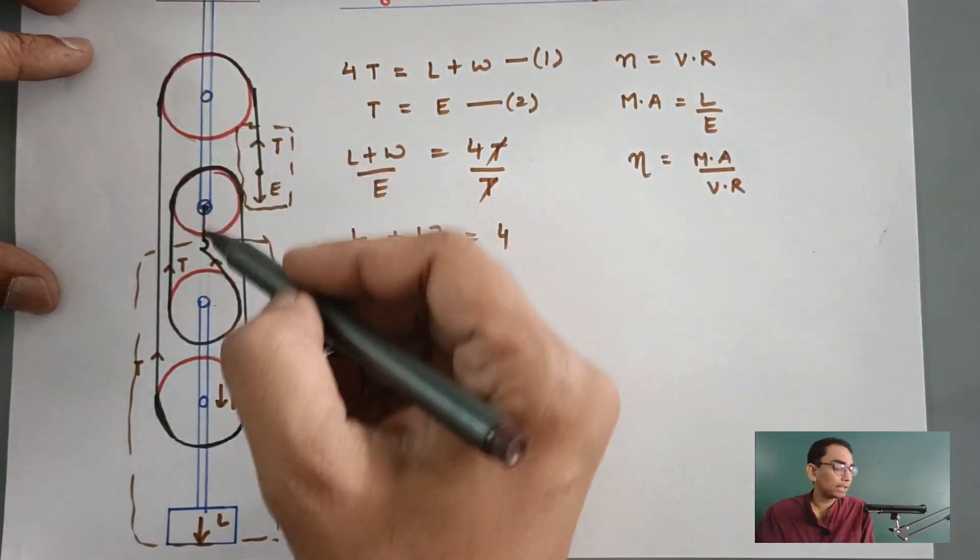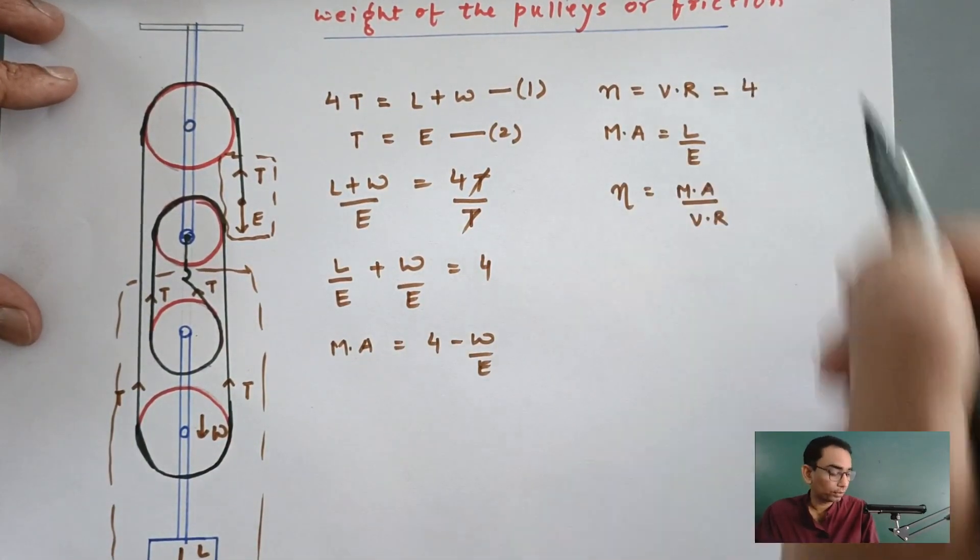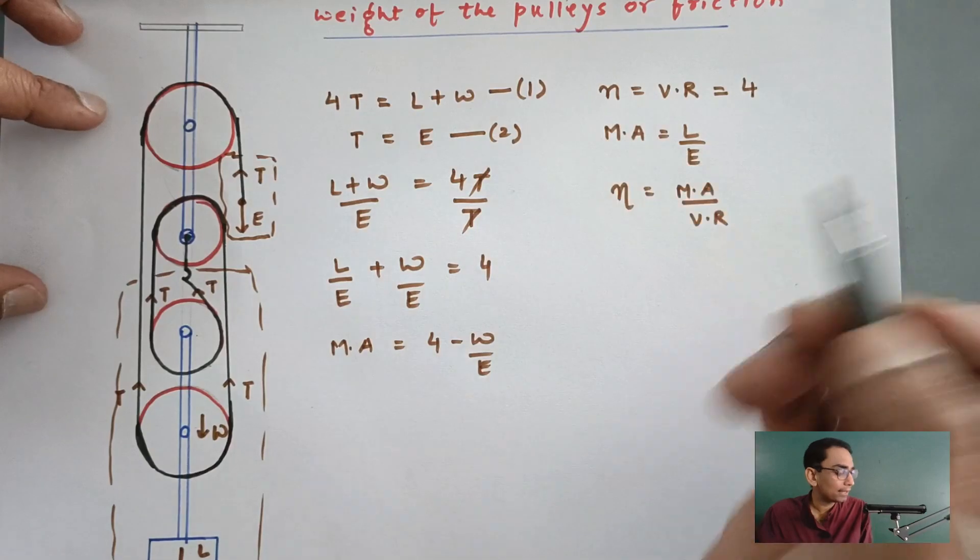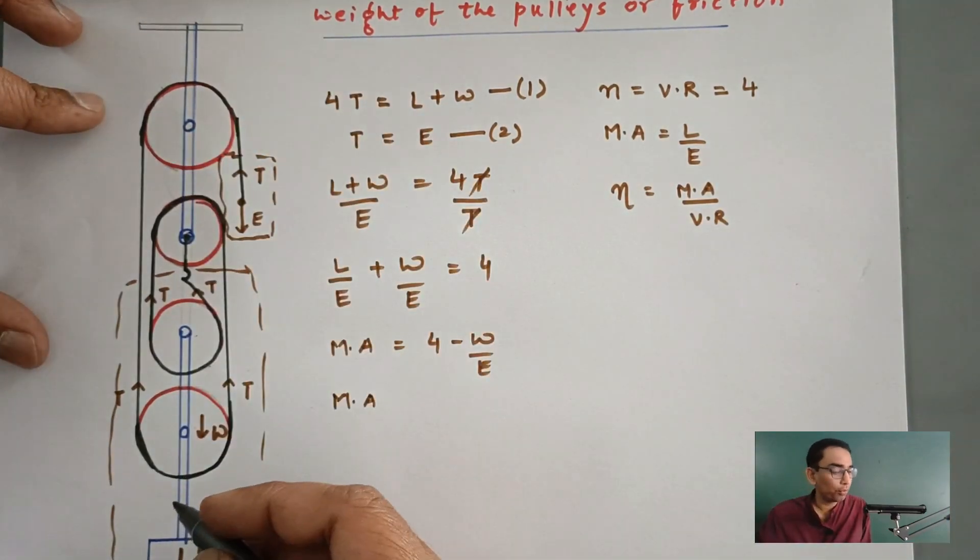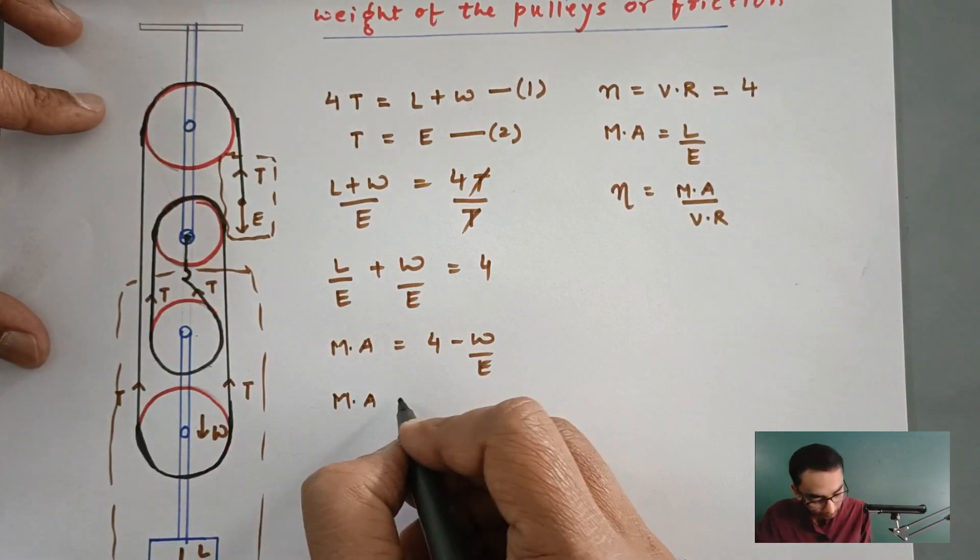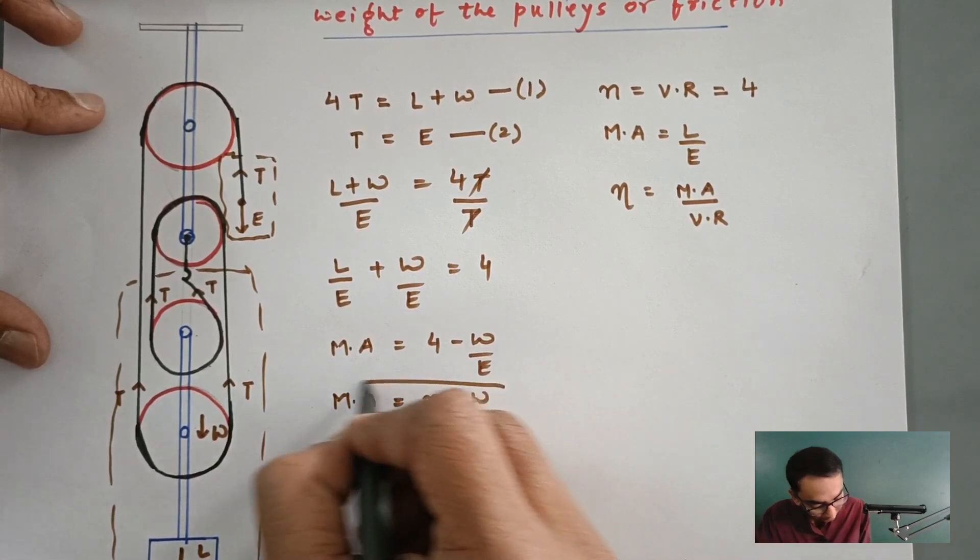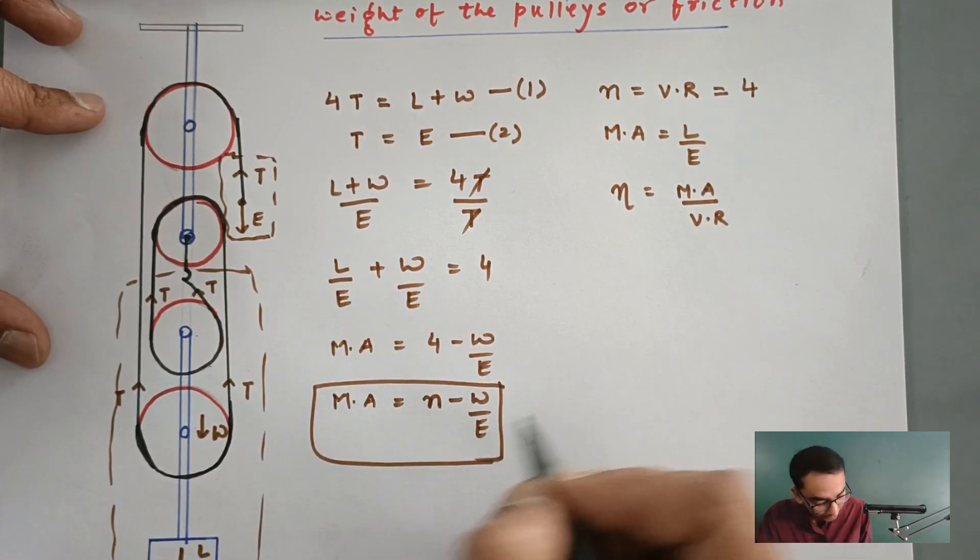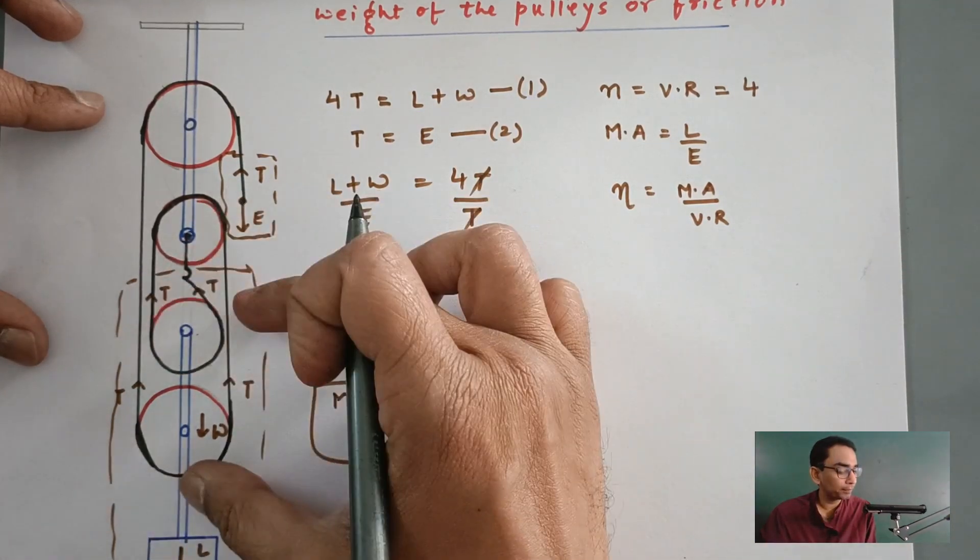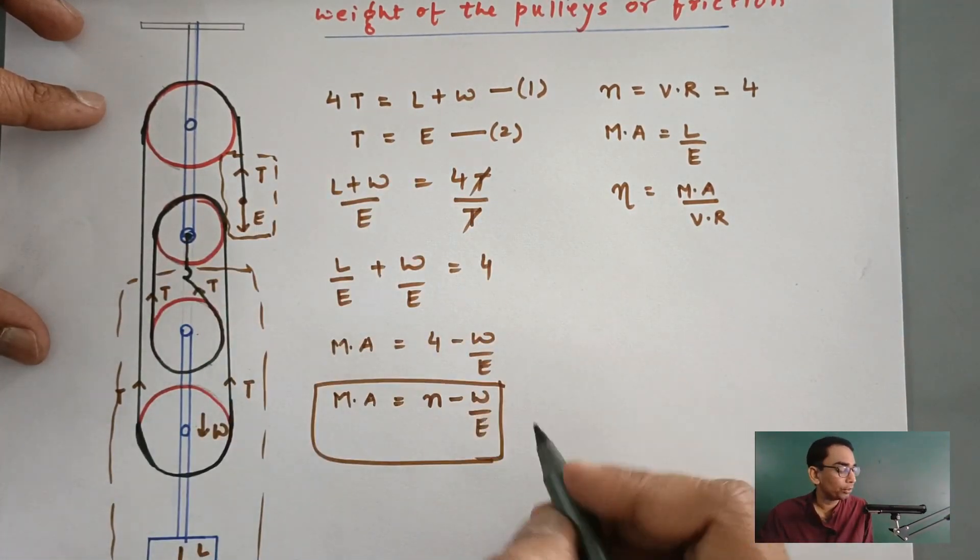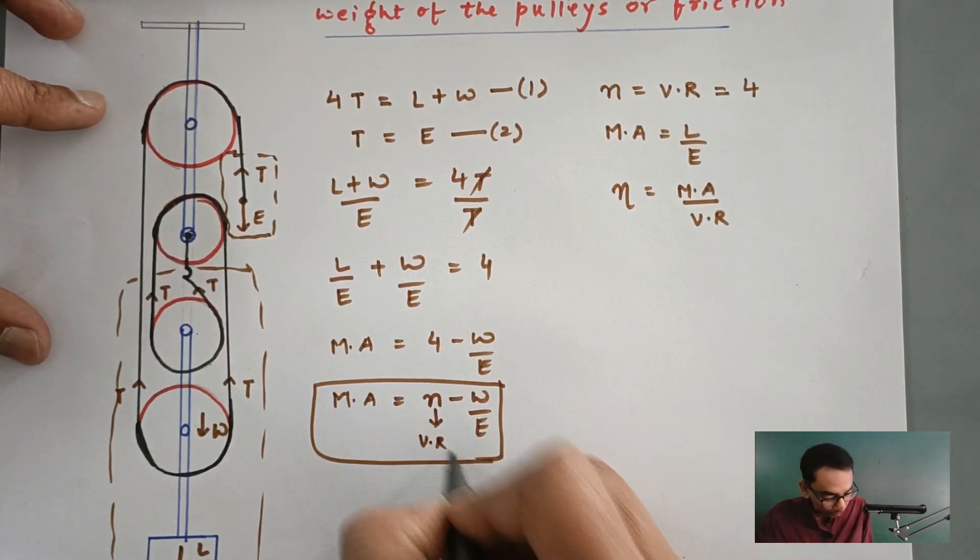We do know in this particular case, there are 4 number of pulleys. So, the velocity ratio is 4. Instead, I am going to replace it by n, generalizing the things. Had it been n pulley system, here we have 4 pulleys. Had it been n pulleys, then this mechanical advantage, instead of 4, it will be n minus W divided by E. This is the first relationship where W is the weight of the bottom part of the pulley. The hanging part of the pulley which is connected with the load, E is the effort, n can also be mentioned as velocity ratio.